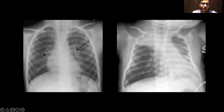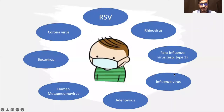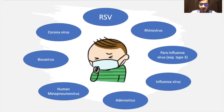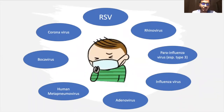The spectrum on X-ray can be as simple as perihilar infiltrates to as severe as complete right-sided upper lobe collapse or left-sided lower lobe involvement. The main causes are RSV, followed by rhinovirus, parainfluenza virus especially type 3, influenza virus, adenovirus, human metapneumovirus, bocavirus, and in the present condition, coronavirus.